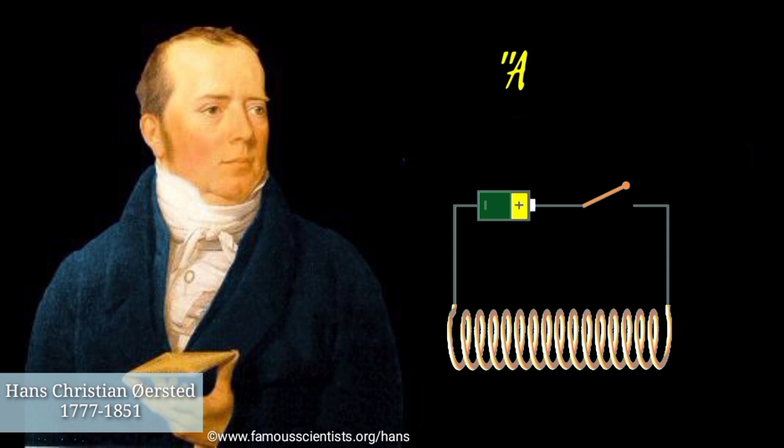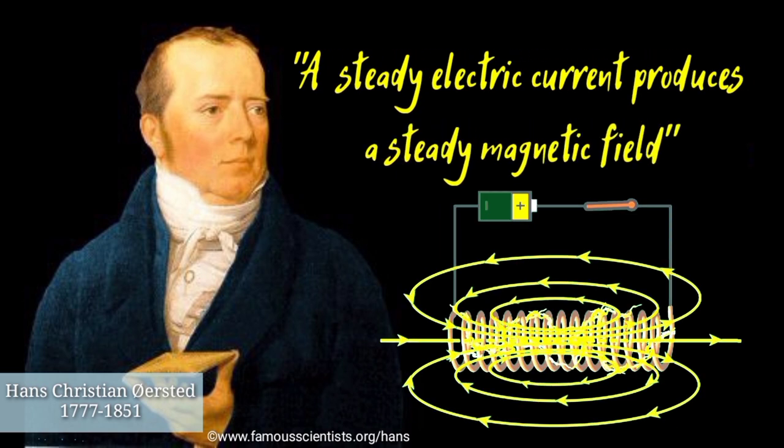In 1890, Hans Christian Orsted discovered that a steady current produces a steady magnetic field.